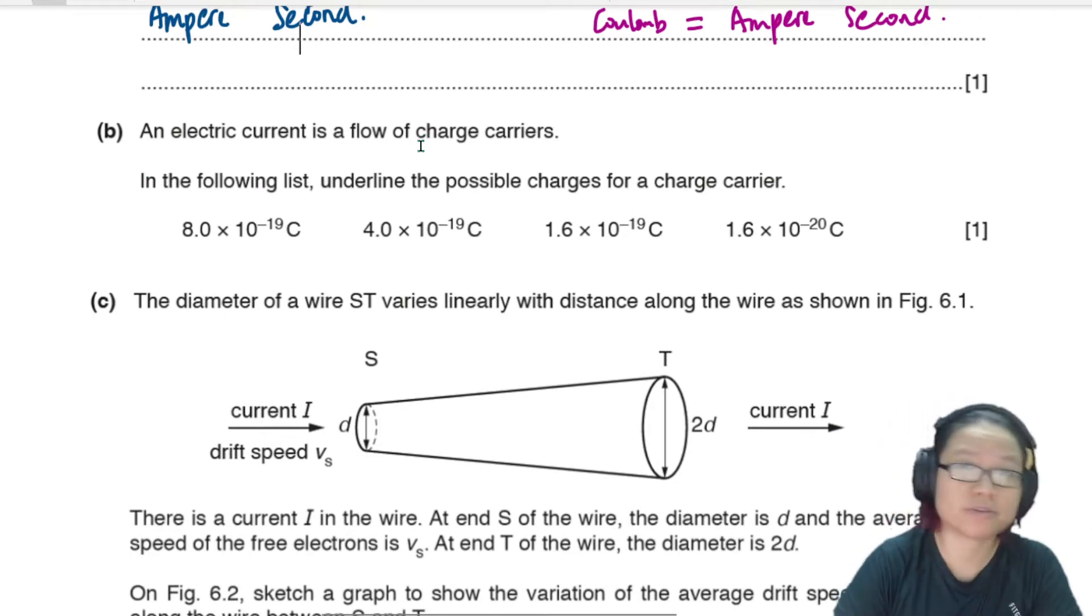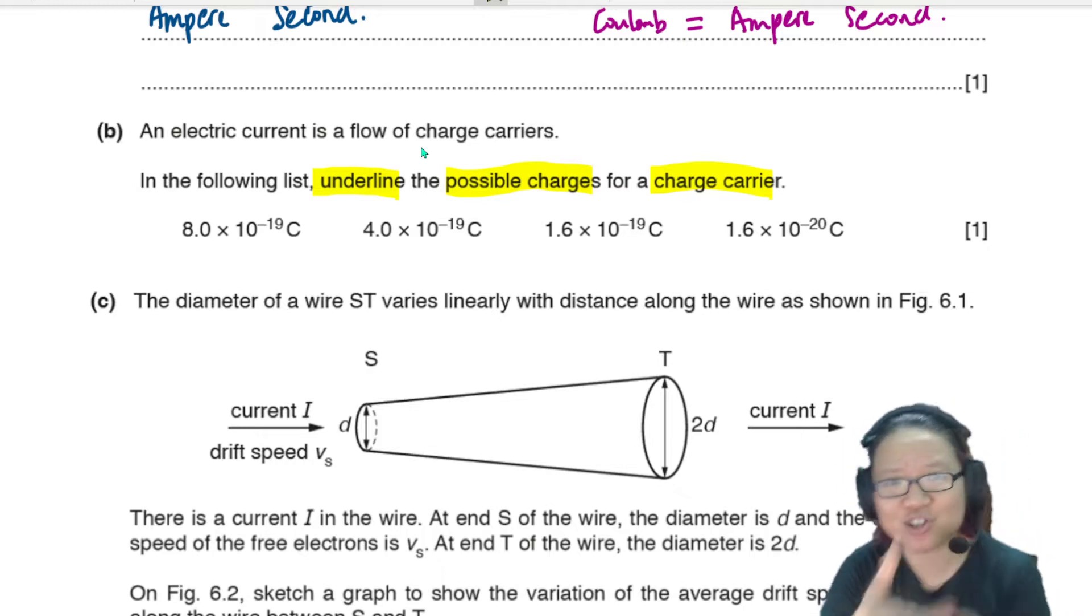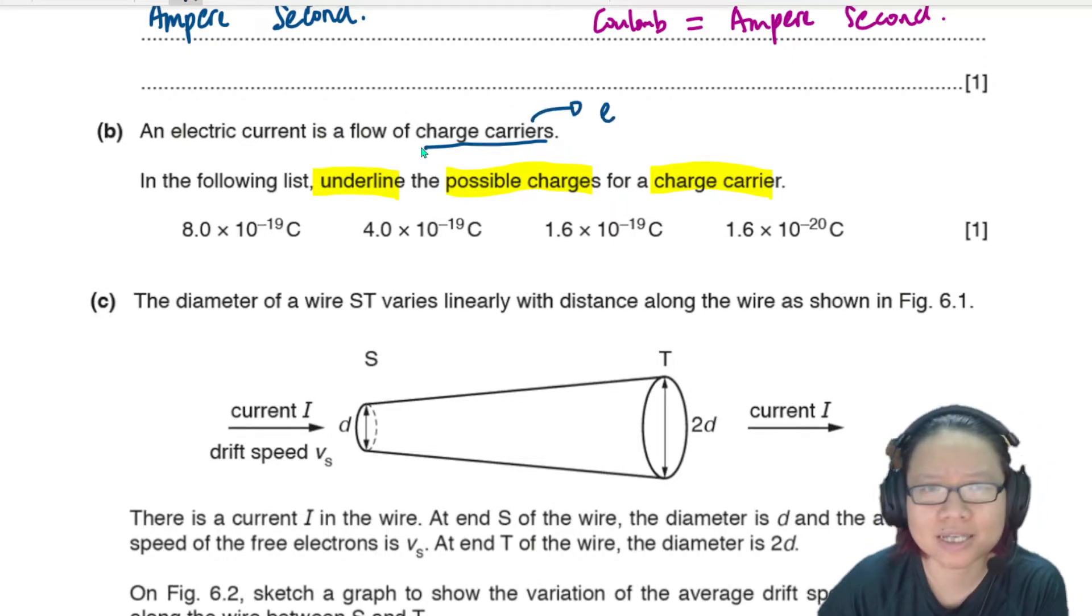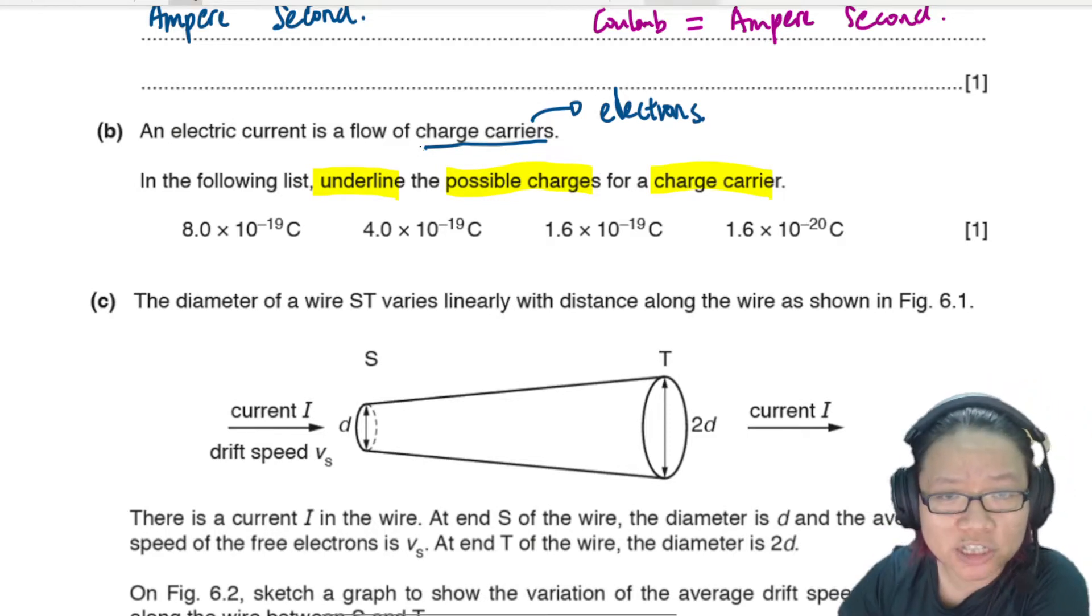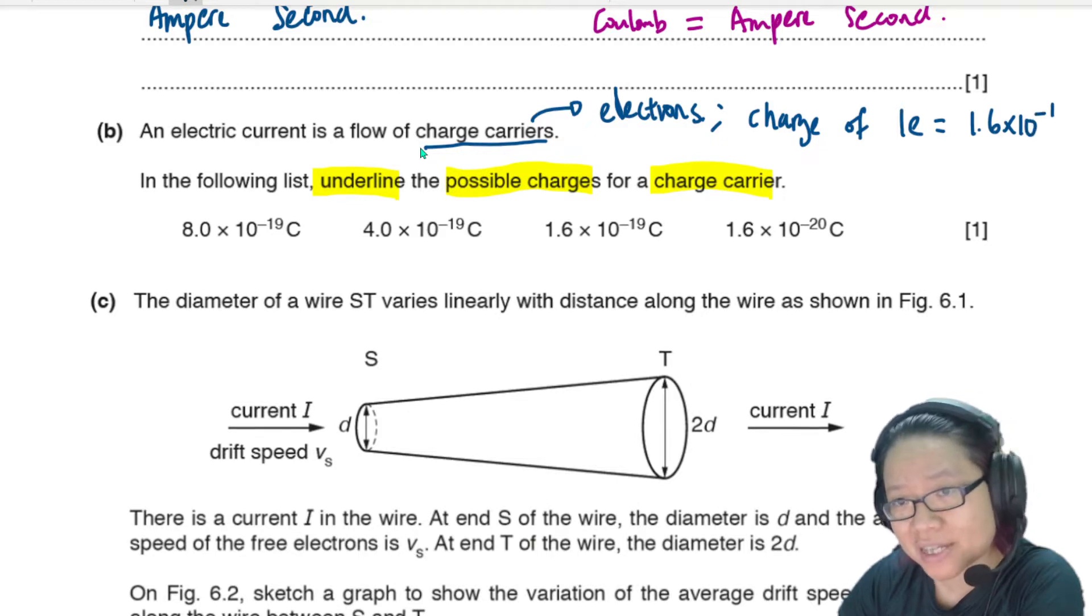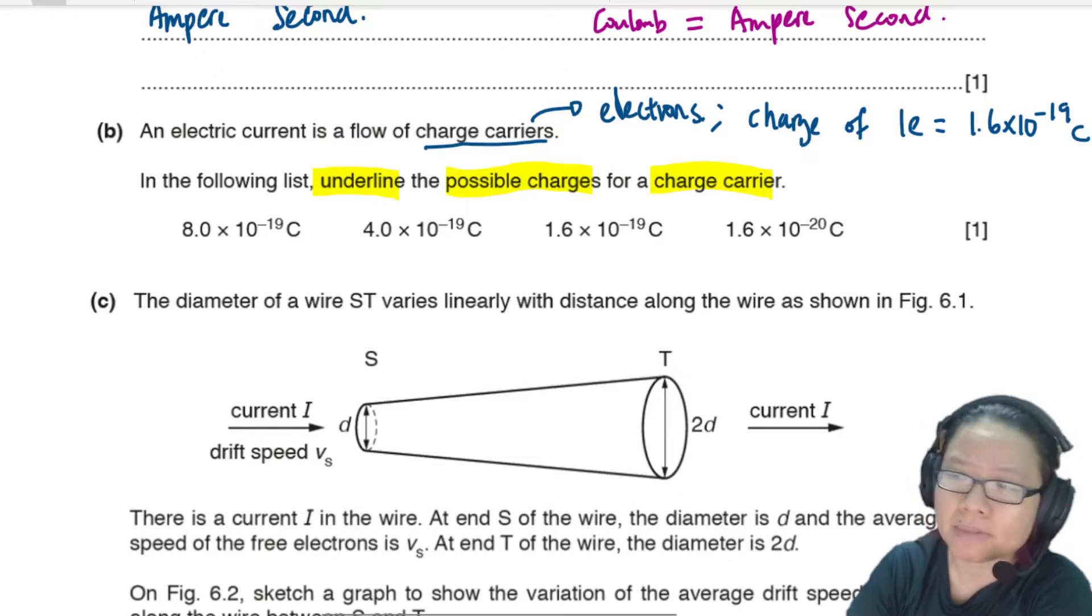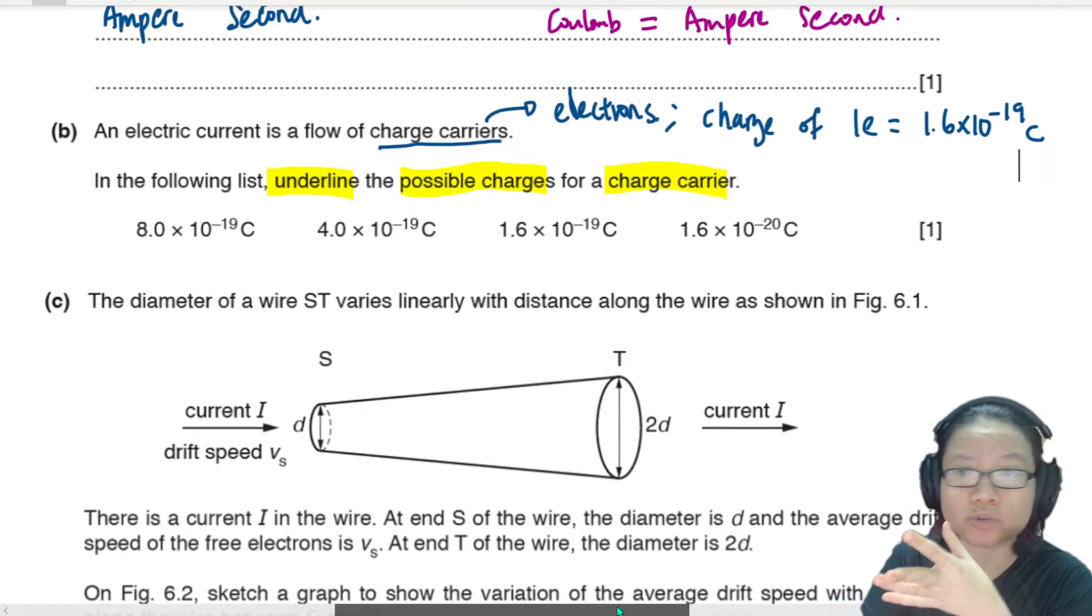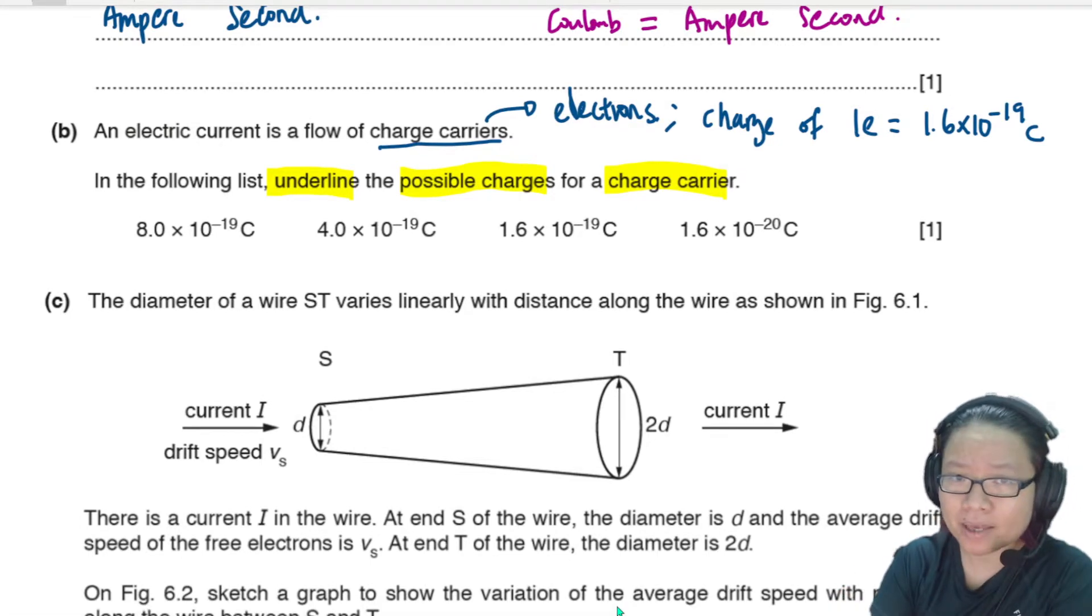An electric current is a flow of charge carriers, a flow of marbles, a flow of electrons. In the following list, underline the possible charges for a charge carrier. So let's think a bit. Our charge carriers, the tiniest one, is our little baby electrons. So our charge carriers are electrons in your circuit. So if they are electrons, then let's think about what is the charge of one electron. The charge of one electron is 1.6 times 10 to the power of negative 19 Coulomb. And you might be wondering, this number, they give you in the exam. Don't worry. If you don't remember this, what I like to call the elementary charge, it will be given to you in your table of constants.